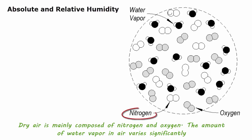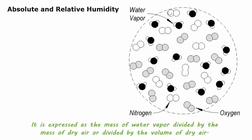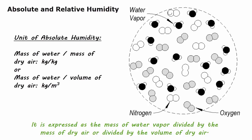Dry air is mainly composed of nitrogen and oxygen. The amount of water vapor in air varies significantly. Absolute humidity measures the amount of water vapor in a body of air regardless of its temperature. It is expressed as the mass of water vapor divided by the mass of dry air, or divided by the volume of dry air.